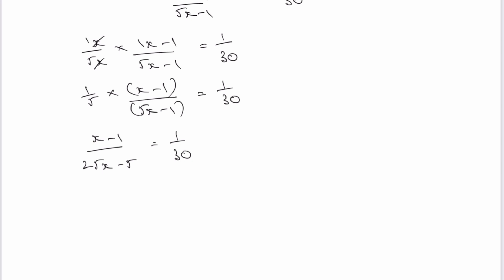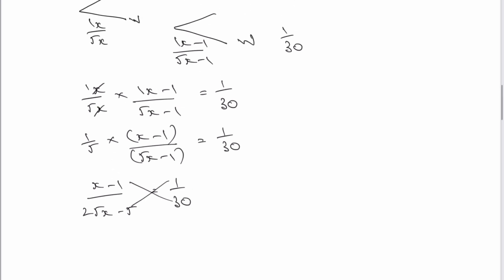Now, what I can do here is cross multiply, just to make my life a little bit easier. Now, if I cross multiply, what I end up with is 30 times x minus 1 is going to equal 25x minus 5.